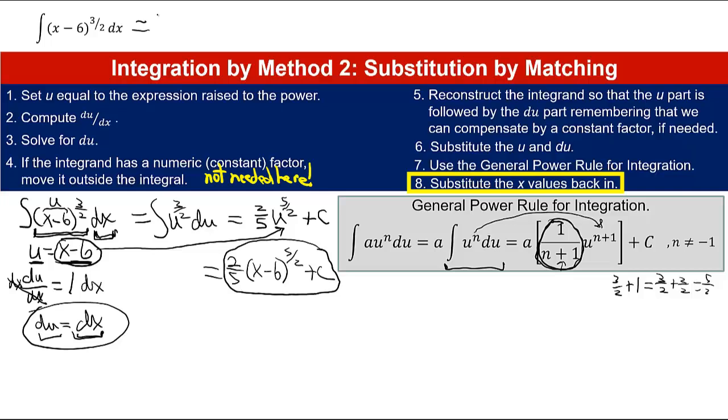When all is said and done, the integral of the quantity x minus 6 to the 3 1/2 power is 2/5 times the quantity x minus 6, raised to the 5/2, plus the constant of integration, c.